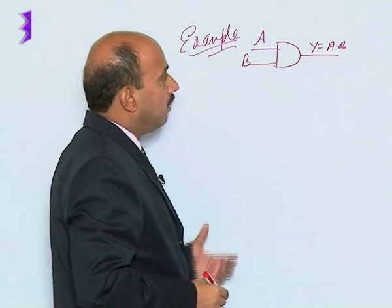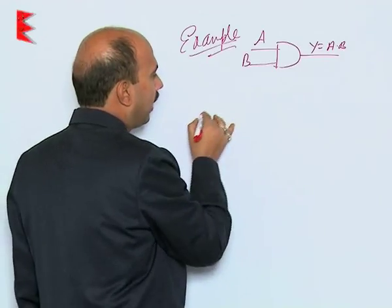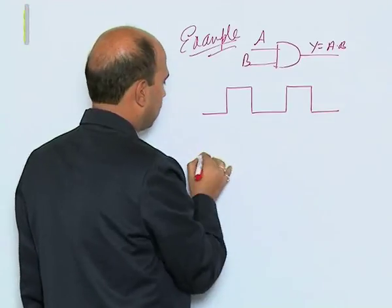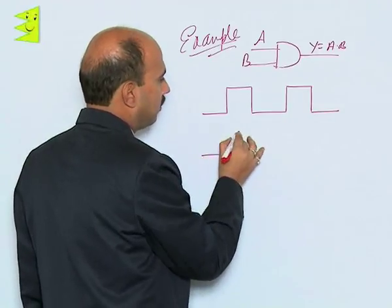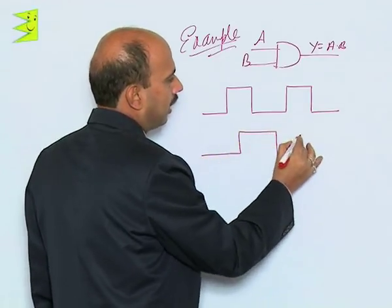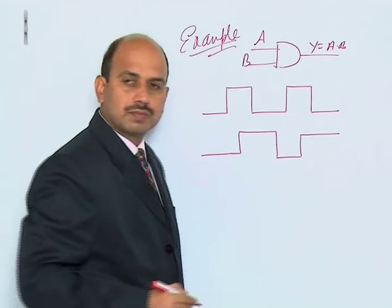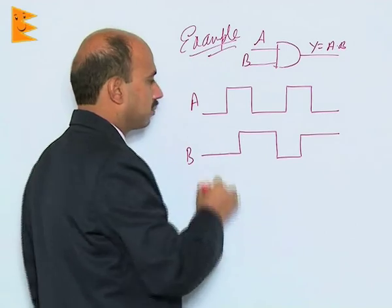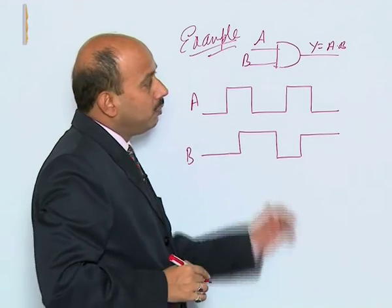Now if I take two inputs as a wave like this, these are the waves which we have taken as input. This is A and this is B. What will be the output?